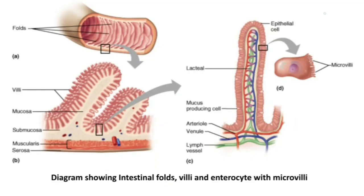This slide shows the absorptive adaptations in the small intestine: the enormously long small intestine having folds; villi, which are the finger-like projections of the mucosa; and the mucosal cell having microvilli at the free end. All these structures increase the surface area of the small intestine and ensure maximum absorption.